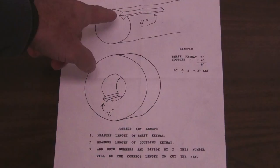So you're going to take the two lengths, we'll take the motor shaft length and the coupler length and we'll add those two together and then we divide by two and that gives us the correct length of the key itself.